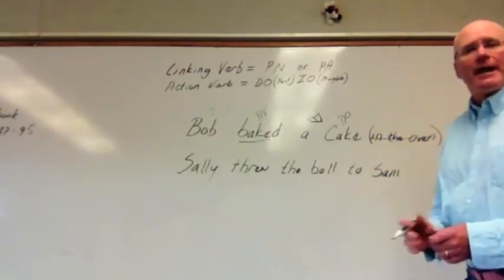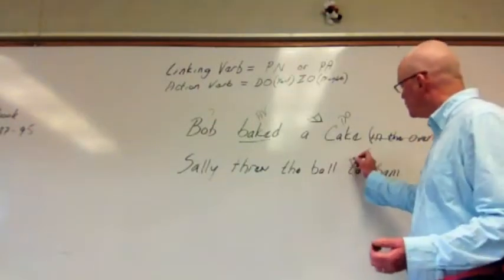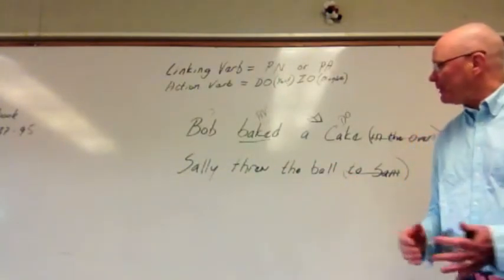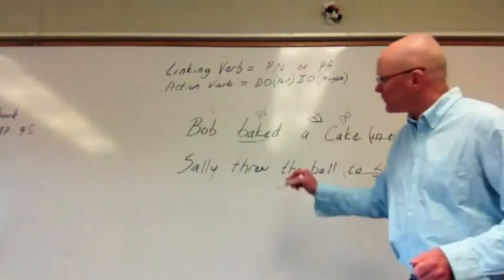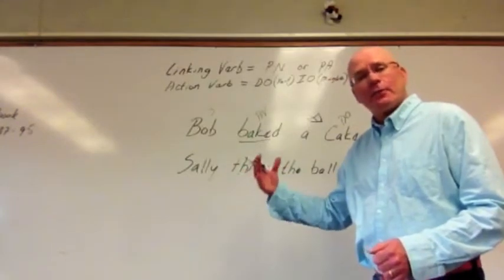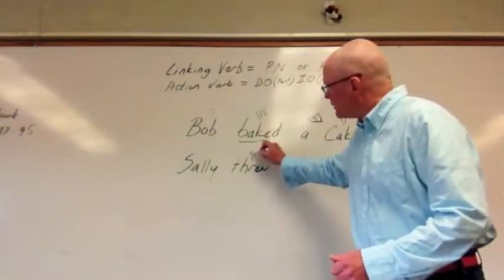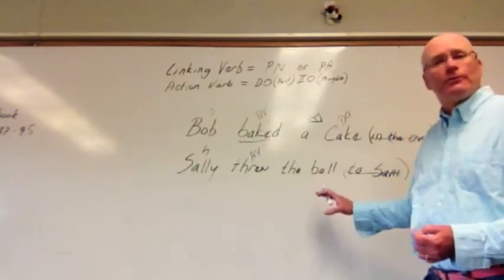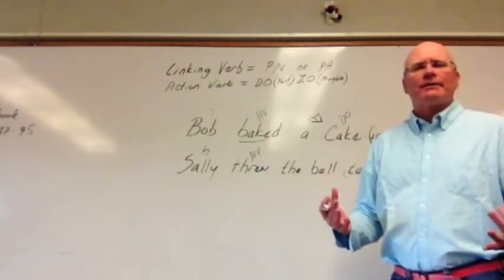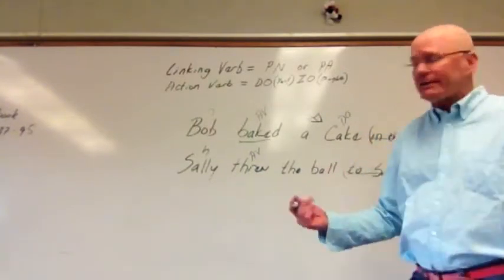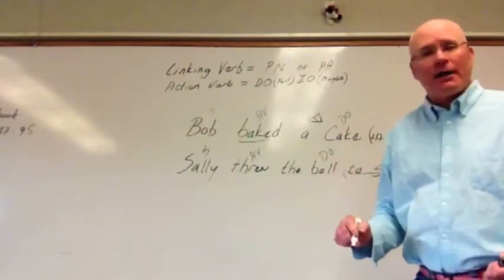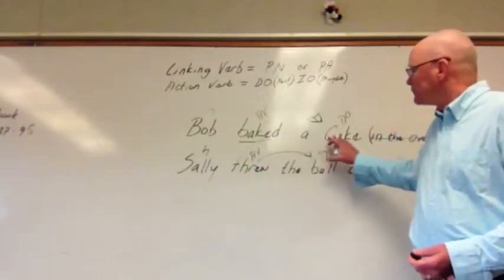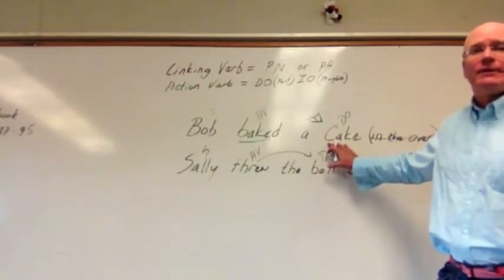The next sentence: Sally threw the ball to Sam. Again, we isolate the prepositional phrase and cross it out — to Sam is our prepositional phrase, so we get rid of it. We're left with Sally threw the ball. Threw is the verb — is it a linking verb or an action verb? That act of throwing is an action verb. We look left to find our subject, and Sally becomes our subject. Then we ask: is there something in the sentence that directly received the act of being thrown? Yes — it's the ball. So the ball becomes the direct object because ball directly received the action of being thrown. So now we have an action verb and a direct object, which is a noun that directly receives the action of the verb.